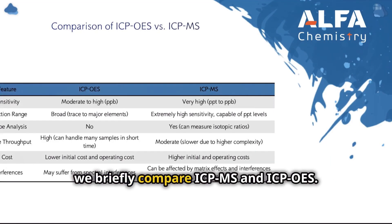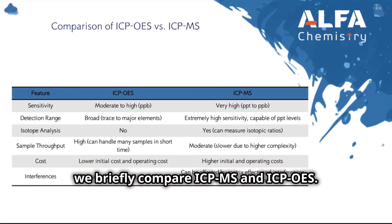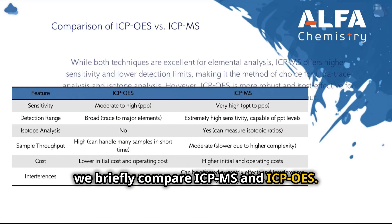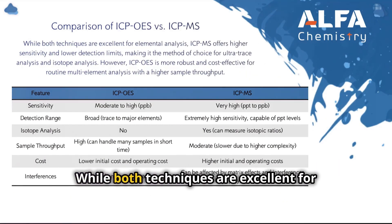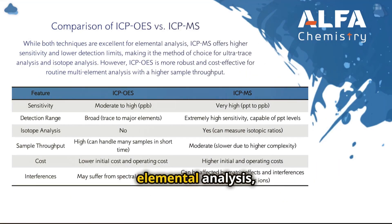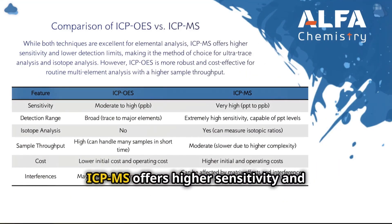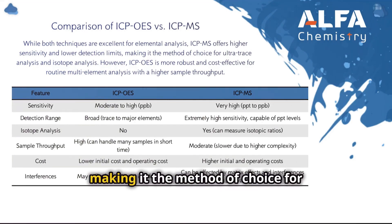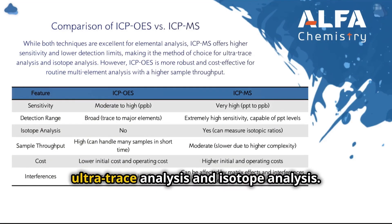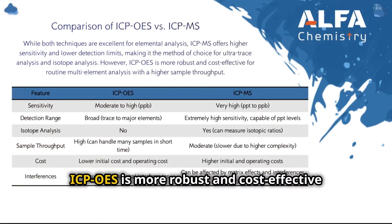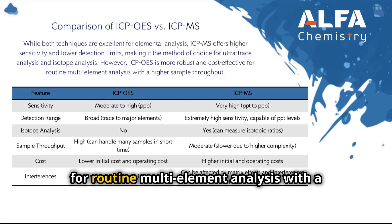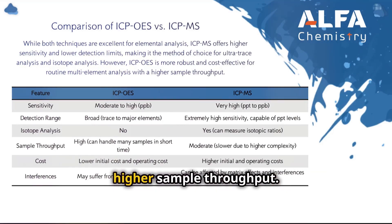Next, we briefly compare ICP-MS and ICP-OES. While both techniques are excellent for elemental analysis, ICP-MS offers higher sensitivity and lower detection limits, making it the method of choice for ultra-trace analysis and isotope analysis. However, ICP-OES is more robust and cost-effective for routine multi-element analysis, with a higher sample throughput.